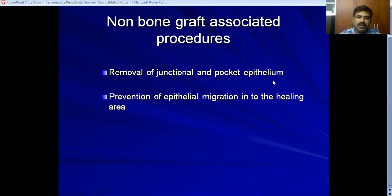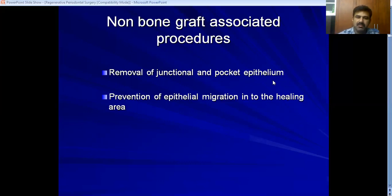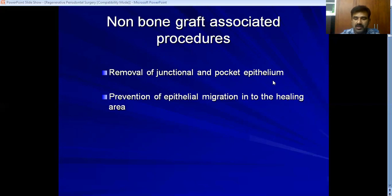Non-bone graft associated procedures include: first, removing junctional and pocket epithelium. The epithelium has a higher turnover rate than connective tissue cells, so after you replace a flap after periodontal surgery, the epithelium will start migrating along the root surface. So we try to remove this junctional and pocket epithelium. Second, you can prevent the epithelium from migrating into the healing area. The techniques for epithelial removal include curettage, excisional new attachment procedures (ENAP), undisplaced or modified Widman flap, and chemical methods — though chemicals are now only of historical interest since depth of penetration cannot be controlled.